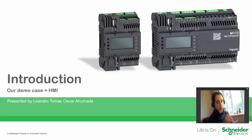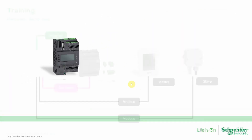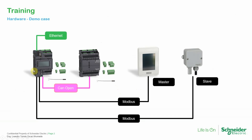First, let's go back to our demo case and see how we can communicate that demo case with one HMI. In our demo case we already have the PLC, the expansion module, the remote display the M172D, and our temperature and humidity sensor. The humidity sensor is connected via Modbus to the PLC, where the PLC is the master and the device is a slave.